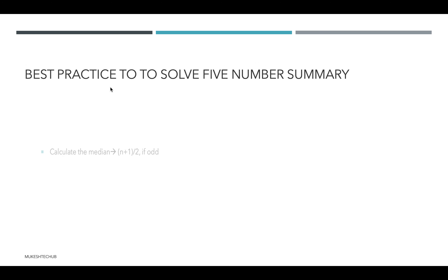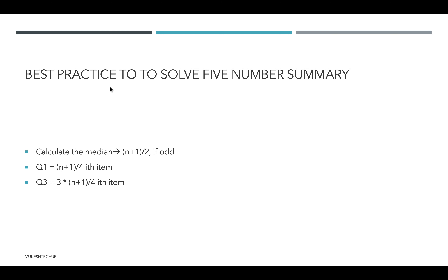Best practice to solve five number summary: first, calculate the median using (n+1)/2 for an odd number of values. For Q1, use (n+1)/4 — the result gives the index, and the value at that index is Q1. For Q3, multiply the Q1 index by 3 — the value at that index is Q3.